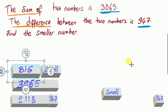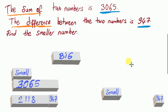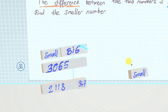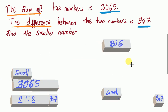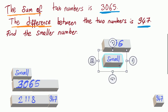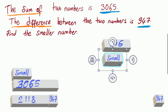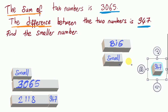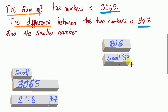The second statement tells you the big number is more than the small number. Can we find the difference? Yes, it's 947. So big number is 947 more than small number.